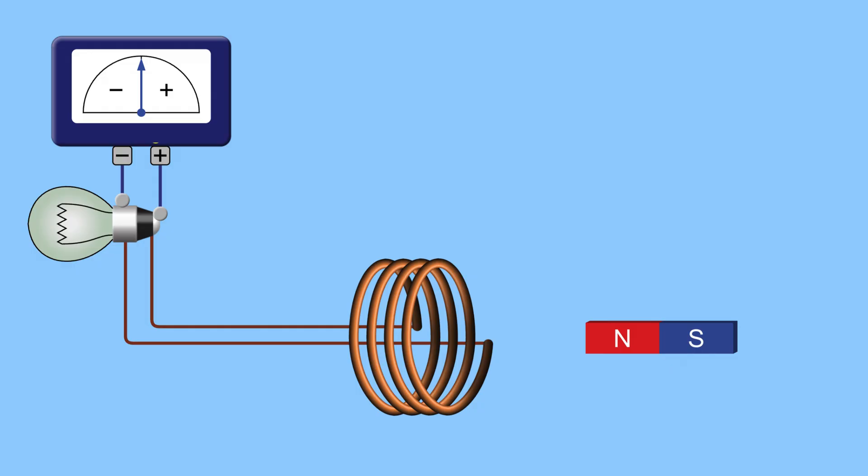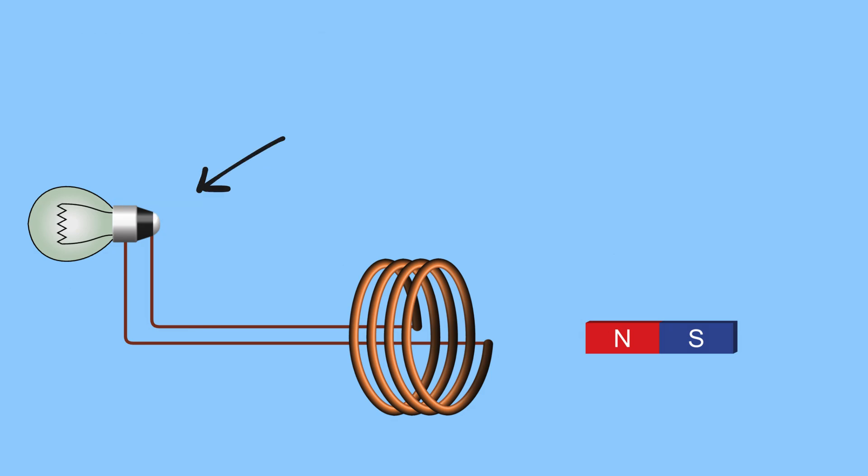He started by placing a magnet near a coil of copper wire connected to a simple current-detecting device—something like a compass needle called a galvanometer, which would swing left or right if any electric current flowed through the wire. We can also replace it with a bulb because it looks nice.